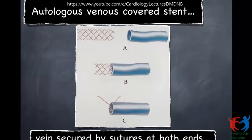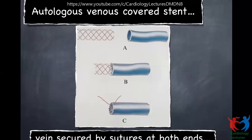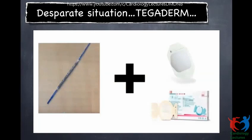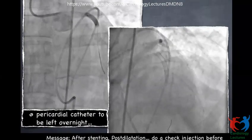If you do not have a covered stent, you could use an autologous venous cover — but you need a surgeon to harvest a vein from the lower limb, stitch it to the stent, and then deploy it, which is cumbersome in a stressful situation. An alternative advocated by the Chinese: use Tegaderm — the adhesive dressing used to fix cannulas — wrap it around a regular stent two or three times, go inside and deploy it. That is the easiest way to prepare a covered stent when none is available on the shelf.